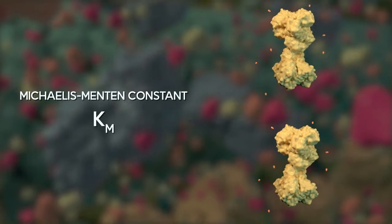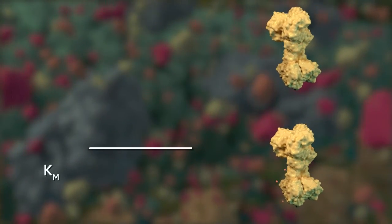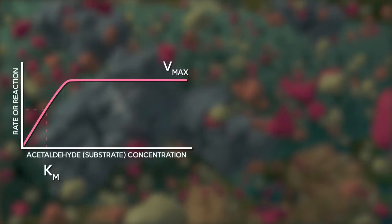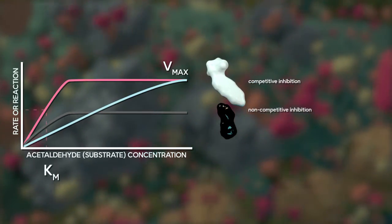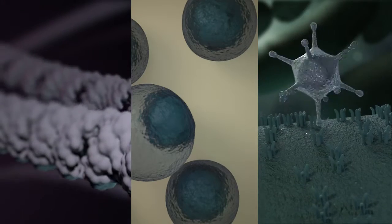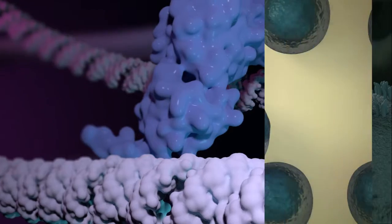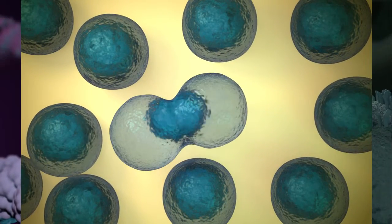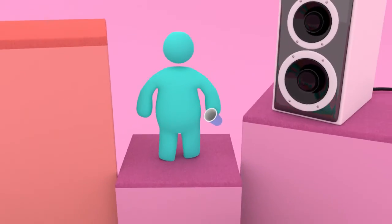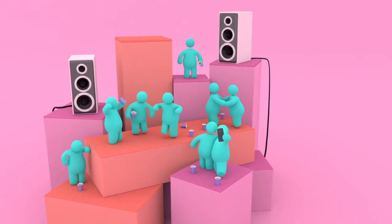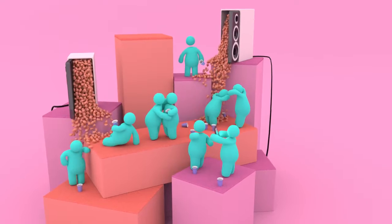Michaelis-Menten models can help predict the behavior of an enzymatic system. The Michaelis-Menten constant Km is a measure of how well the enzyme binds to the substrate and how much substrate needs to be added to the system in order to reach Vmax. Tracking changes in Km and Vmax can help identify the mode of action of inhibitors. The equations can also be used to model gene-protein interactions, cell population dynamics, and other biological scenarios. If you know where to look, Michaelis-Menten dynamics are everywhere — like acetaldehyde accumulation at a party. Now you've V-maximized your appreciation for enzyme kinetics.